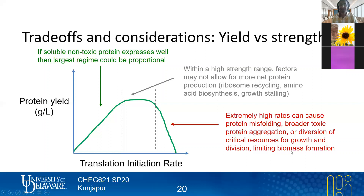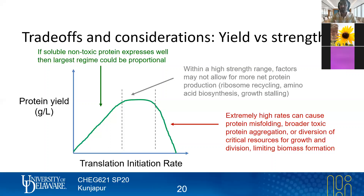You can actually end up in a situation where you transform a strain of E. coli with a plasmid that has such a strong constitutive promoter that when you try to look at your agar plates or grow a liquid culture, you just don't see cell growth for a day or even two days, because of how slowly it's growing.